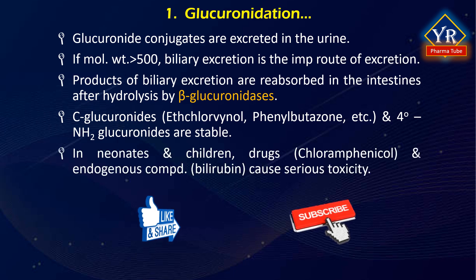In neonates and children, glucuronidation processes are often not fully developed. In such patients, drugs, for example chloramphenicol, and endogenous compounds like bilirubin, which are normally glucuronidated, may accumulate and cause serious toxicity. Inability of infants to metabolize chloramphenicol leads to gray baby syndrome, characterized by ashen appearance developed soon after therapy starts. It may be fatal to 40% of neonates due to circulatory collapse.